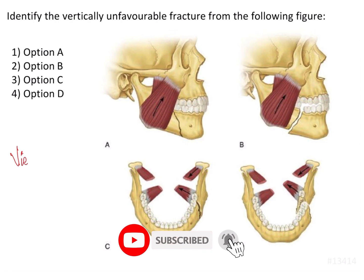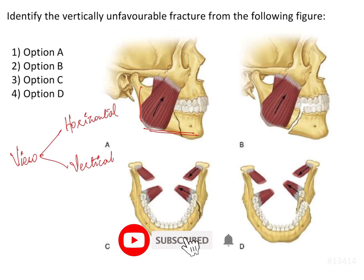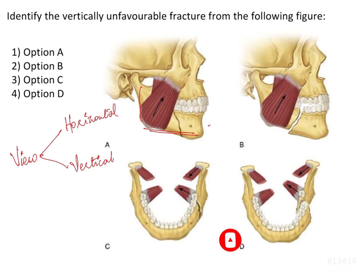Based on the angle of viewing, fractures can be classified into horizontal and vertical. When we say horizontal, it means the mandible is placed horizontally — it is not about how we view it, but how the mandible is placed. When viewing the patient and the mandible looks more vertical, that is called a vertical fracture.